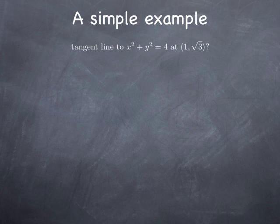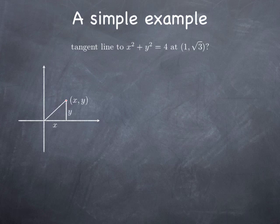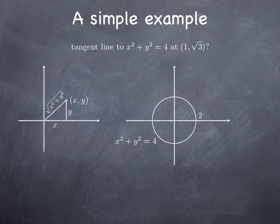Notice that the point (1, √3) is indeed on the curve, because if we plug x = 1 and y = √3, the equation is satisfied. By the Pythagorean theorem, √(x² + y²) is simply the distance between the point and the origin. Therefore, x² + y² = 4 means the distance between a point on the curve and the origin is 2, so the curve is the circle centered at the origin with radius 2.